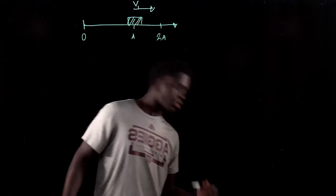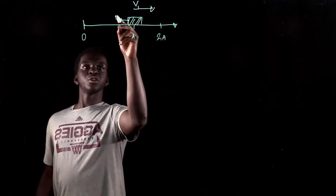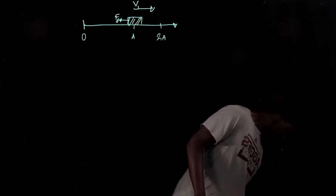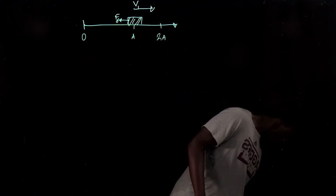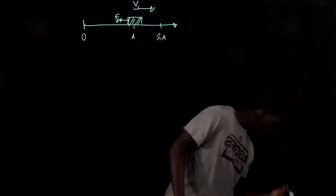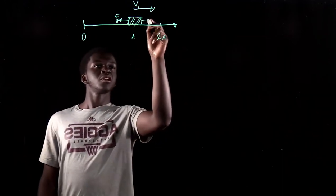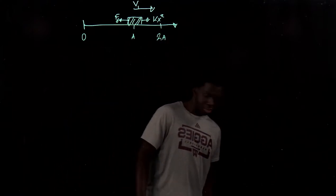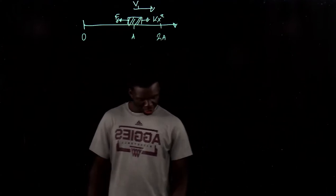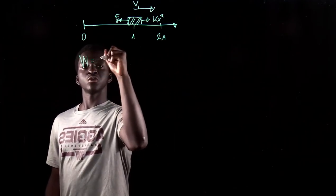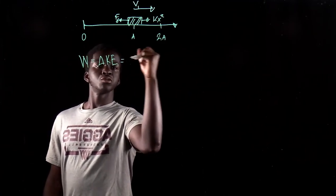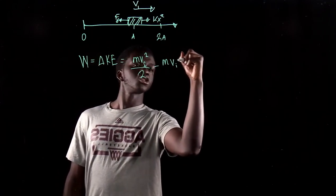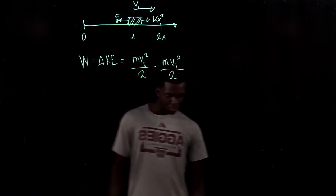Let's draw the free body diagrams of the forces acting on it. There is friction — the coefficient of friction — so we know that's going to be the force of friction. We also have a force pointing to the right, which is kx². So we have both of those forces. Now we can start to solve the problem using the work-energy theorem: Work equals change in kinetic energy, which equals mvf²/2 minus mv_initial²/2.